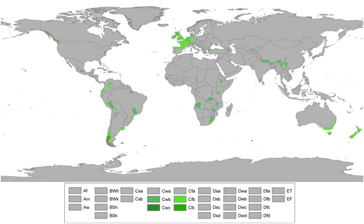Summers are cool, with the warmest month having a mean temperature below 22 degrees Celsius. Poleward of the latter is a zone of the aforementioned subpolar oceanic climate Köppen CFC, with long but relatively mild for their latitude winters and cool and short summers, with average temperatures of at least 10 degrees Celsius for 1–3 months.